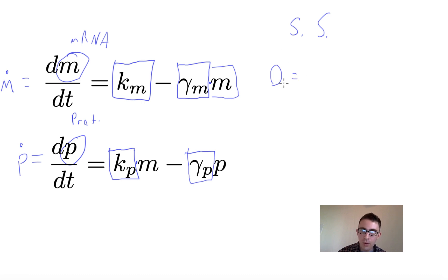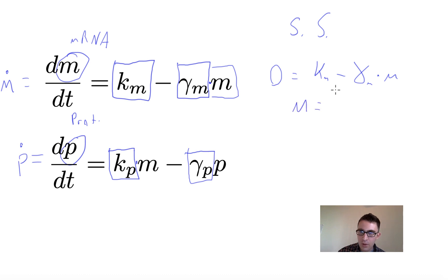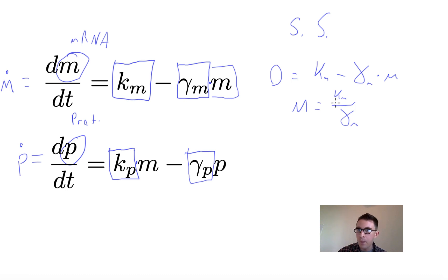Setting the derivative equal to zero and solving, the steady state for m turns out to be m equals k sub m over gamma sub m. This is intuitive — the steady state is just the production rate divided by the degradation rate.